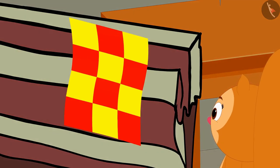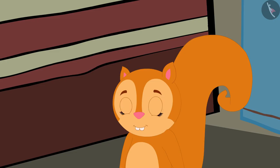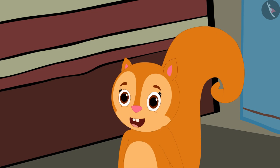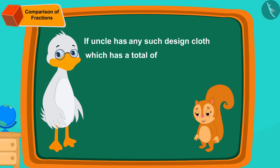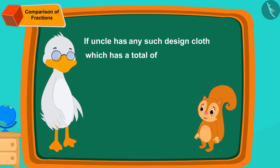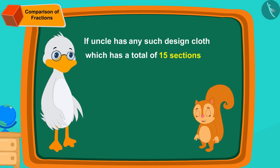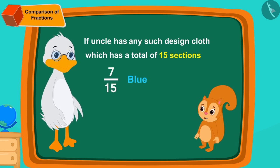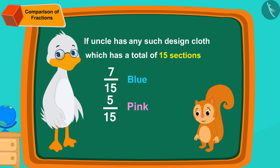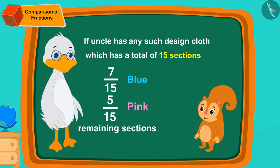While Golu was standing at uncle's shop, Chanda came there. She saw the design made on Golu's cloth and liked it very much. Now she is asking uncle if he has any such design cloth which has a total of 15 sections — of them seven fifteenths should be blue, five fifteenths pink, and the remaining sections should be green.